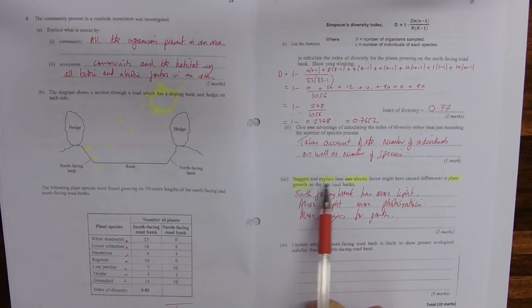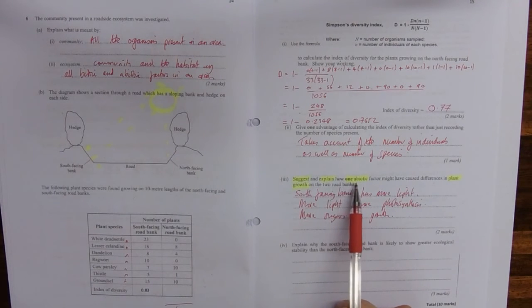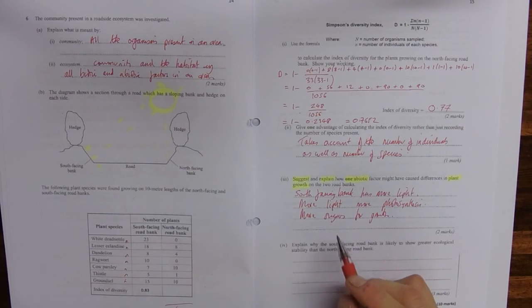And actually, this question says, suggests another abiotic factor. Well, it might be warmer in one place than another, so we can go warmer, and so our effect on enzymes, so more kinetic energy for enzymes, so more growth, that sort of thing as well.